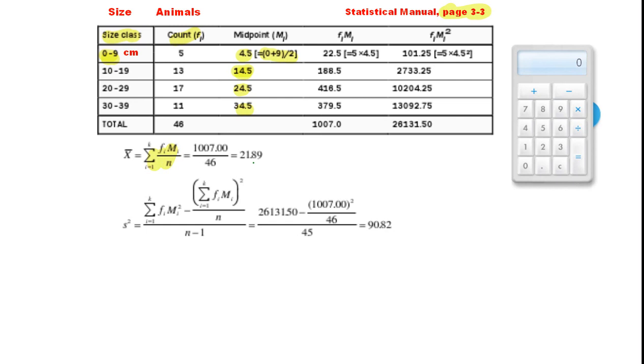The next step for working out the mean is to multiply the count by the midpoint. So 5 times 4.5 gives us 22.5, 13 by 14.5 gives us 188.5, and so on. Then we add those values up. That gives us 1,007.